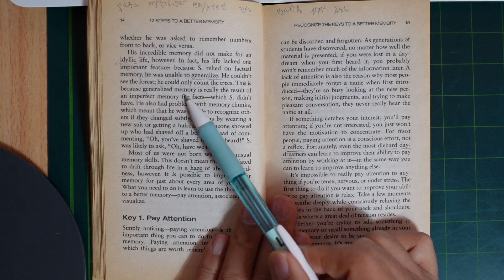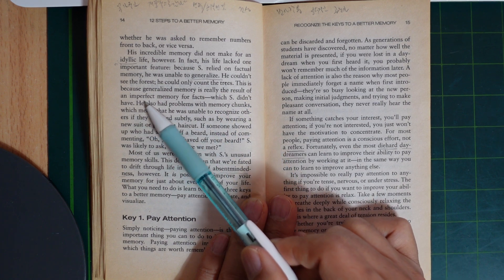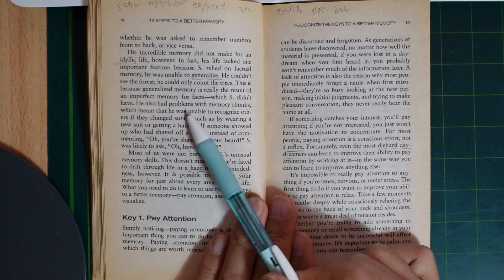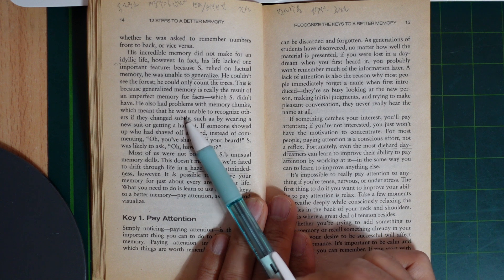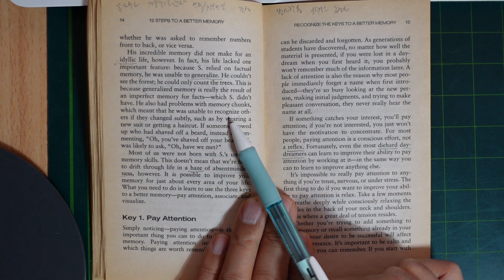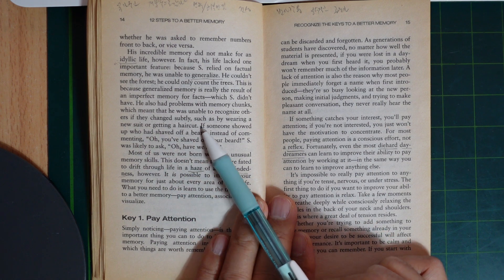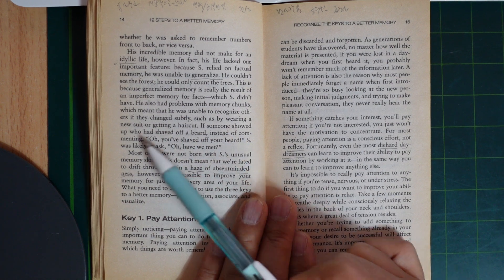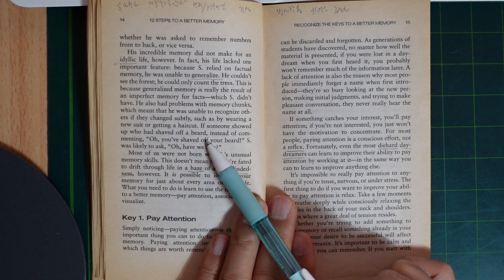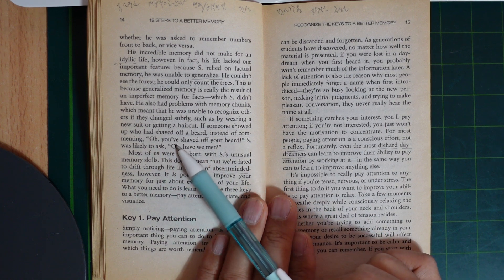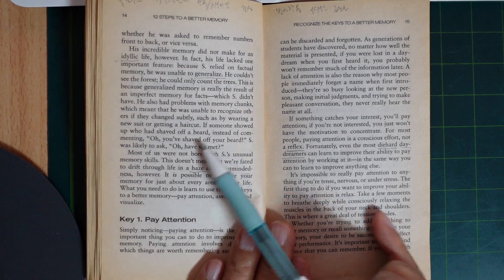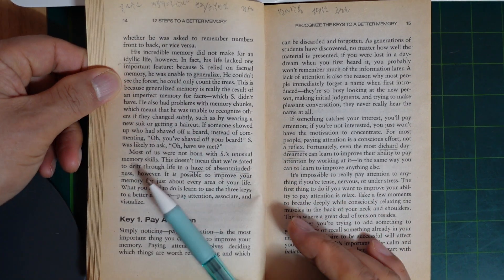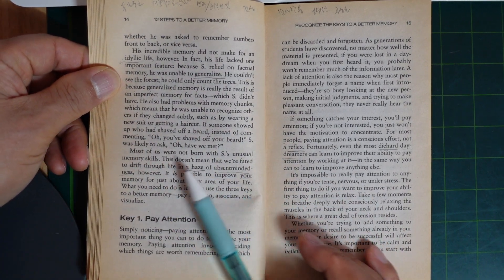This is because generalized memory is really the result of an imperfect memory for facts, which S didn't have. He also had a problem with memory chunks, which means that he was unable to recognize others if they changed subtly, such as by wearing a new shirt or getting a haircut. If someone showed up who had shaved off a beard, instead of commenting 'Oh, you've shaved off your beard,' S would likely ask 'Oh, have we met?'